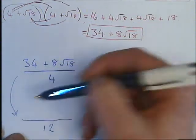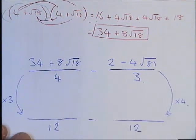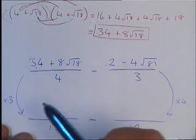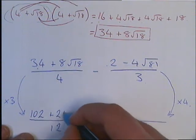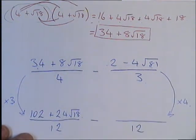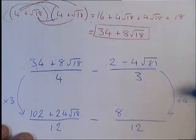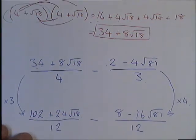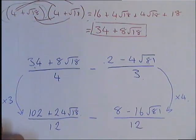What did we have to times our 4 by? We had to times it by 3. What did we have to times our 3 by? We had to times it by 4. So now we need to do the same to both of our top rows. So we need to do 34 times 3 is going to give us 102, plus 8 times 3, which is going to give us 24, and then our root 18 stays the same for now. Then we've got 2 times 4 is 8, minus 4 times 4 is minus 16, and our root 81 stays the same. So now we've got our denominators the same. We need to think about how we can add them together. We can't add them together just yet because our surds haven't been simplified down yet, and they may be the key to help us adding them together.